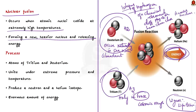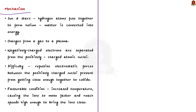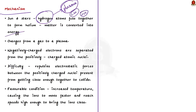When atoms of tritium and deuterium unite under extreme pressure and temperature to produce a neutron and helium isotope, an enormous amount of energy is released — several times higher than the amount produced from fission. Fission can be controlled but fusion cannot. A very good example of nuclear fusion is what happens in the sun and other stars, where hydrogen atoms fuse to form helium and matter is converted into energy. Hydrogen is heated to very high temperatures, changing from a gas to a plasma in which negatively charged electrons are separated from positively charged atomic nuclei. Normally, fusion is not possible because strongly repulsive electrostatic forces between positively charged nuclei prevent them from getting close enough.